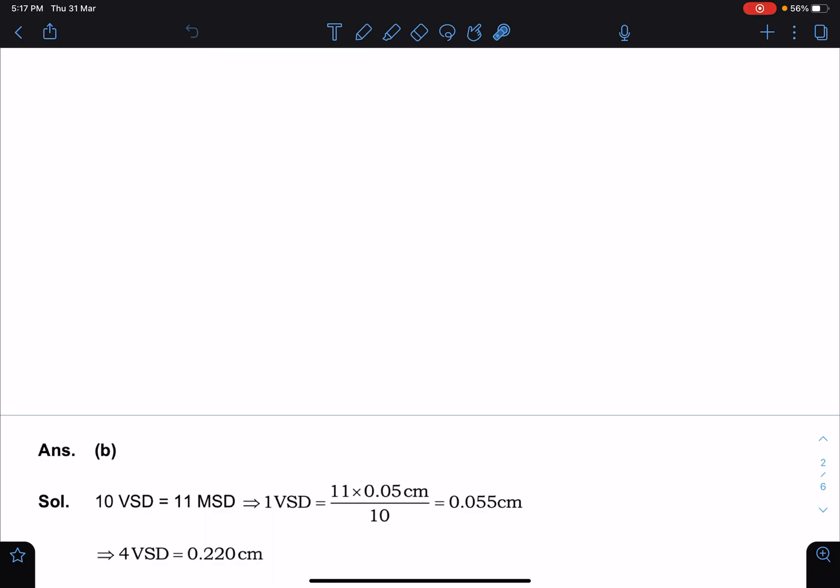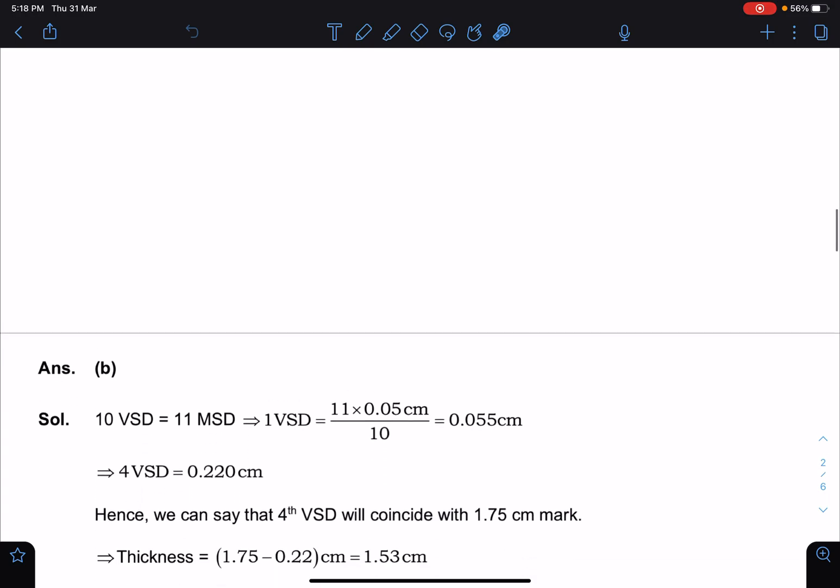And I will suggest in every modified vernier problem we must use the basic concepts of length measurement. That means for any one fixed element we can measure the length and subtract for getting the correct length.